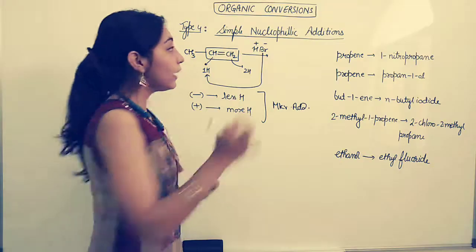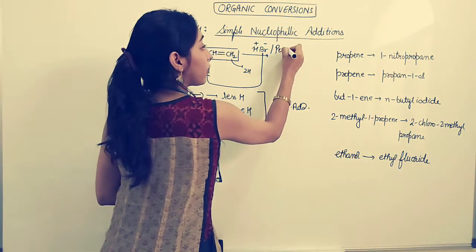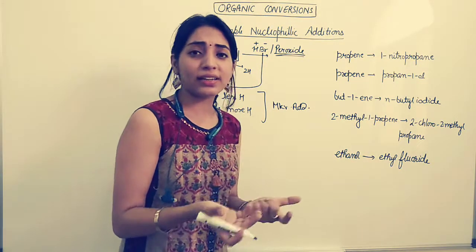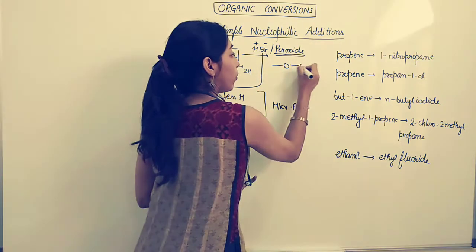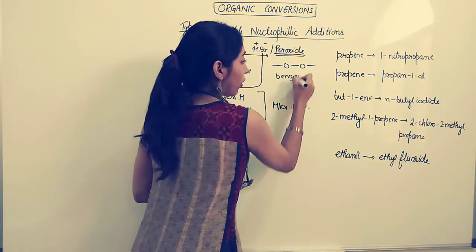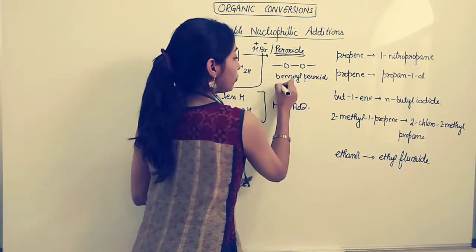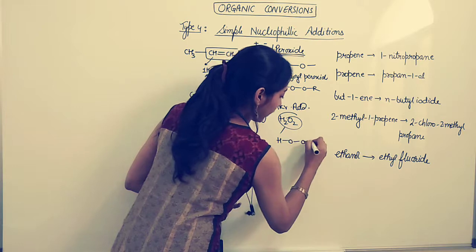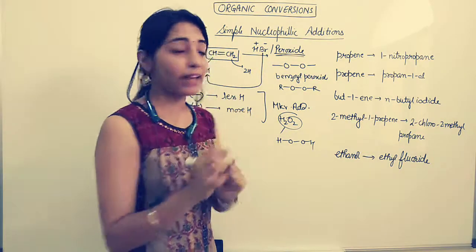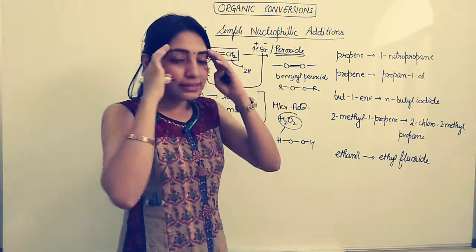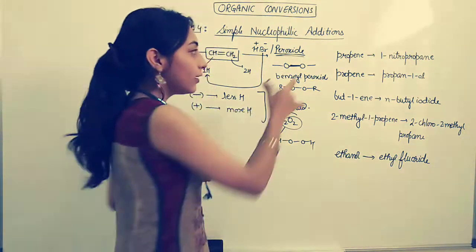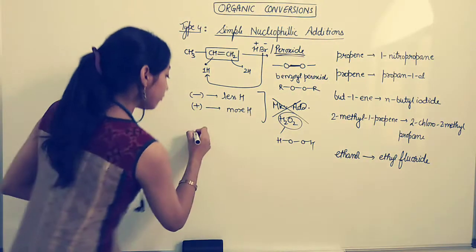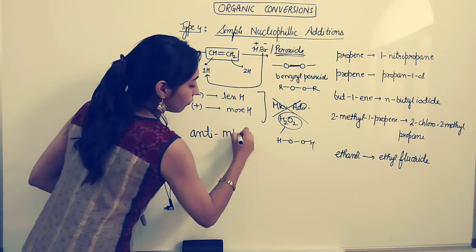But now if there is the presence of this word peroxide - it may be written as peroxide or you can see O-O bond or you see benzoyl peroxide or you see ROOR or you see H2O2 which is nothing but HOOH. So wherever you see this O-O single bond, this is kind of dangerous. Wherever this O-O bond is there, the rule changes.